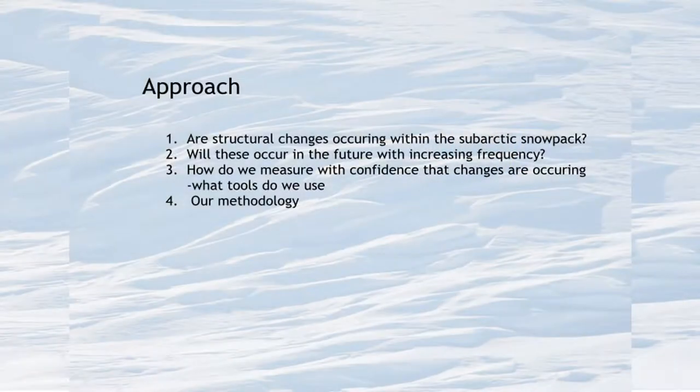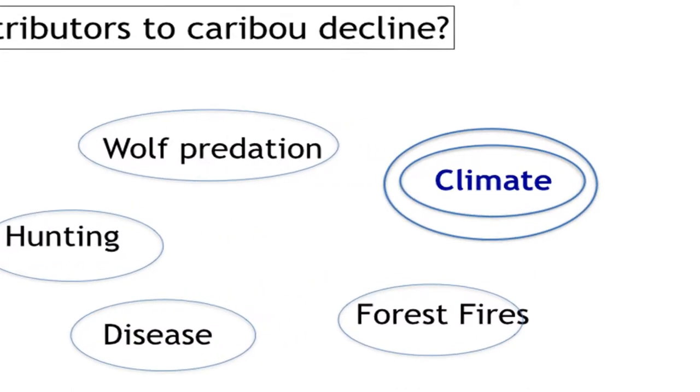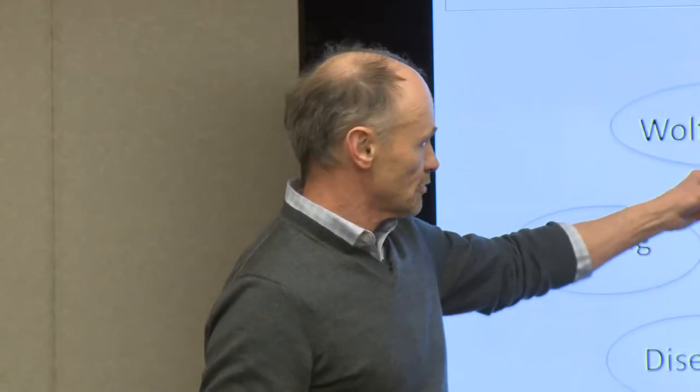So why is this? There are four things I'll cover: Are structural changes occurring within the subarctic snowpack? Will these occur in the future with increasing frequency? How do we measure with confidence that changes are occurring? And how do we apply those tools confidently? The factors in caribou herd depletion are interrelated — climate ties into forest fires, wolf predation, and disease. The snowpack is ubiquitous in terms of the tundra and its effect on everything.